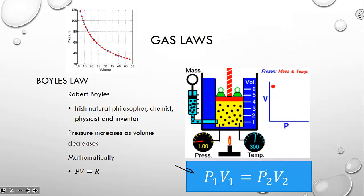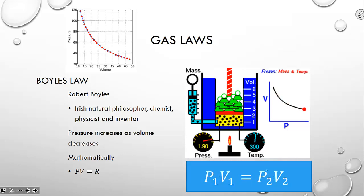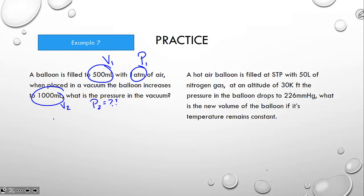Boyle's Law problems will often have us solve for pressure or volume after a change. They'll say you have some pressure and the volume changed, or you have some volume and the pressure changed — how does the new volume work out? These are Boyle's Law problems. Pressure times volume will always equal pressure times volume: P₁V₁ = P₂V₂.